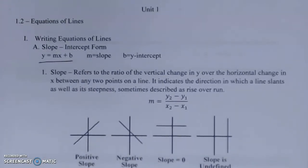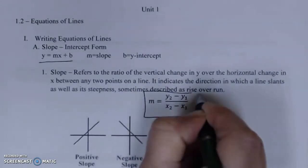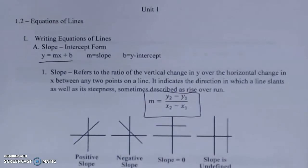Slope refers to the ratio of the vertical change in y over the horizontal change in x between any two points on a line. It indicates the direction a line slants as well as its steepness, sometimes described as rise over run. This formula is important: when finding slope between two points, use y2 minus y1 over x2 minus x1. You'll plug in your values, do your subtraction, then division. Most often slope is portrayed as an integer or a fraction. Rarely do we convert this into a decimal.